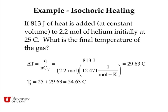Here's an isochoric heating example: if 813 joules of heat is added at constant volume to 2.2 moles of helium gas initially at 25 degrees Celsius, what is the final temperature? Using delta T equals Q divided by CV — and since CV is a molar quantity, we multiply by 2.2 moles — the change in temperature is 29.63 degrees Celsius. Adding that to the initial 25 degrees gives a final temperature of 54.63 degrees Celsius.